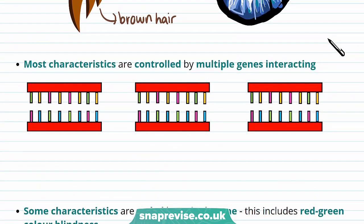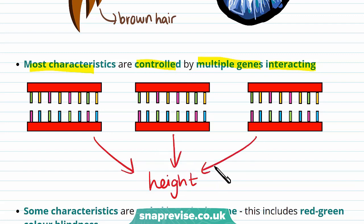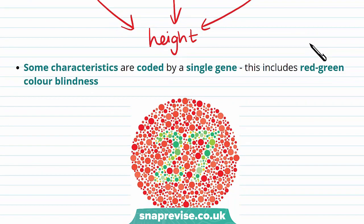However, normally it's not so simple. Most characteristics are controlled by multiple genes interacting. A characteristic like height involves many genes interacting together. However, some characteristics are coded by a single gene, and this includes red-green colour blindness. In people with red-green colour blindness, they have a single gene that makes them unable to tell the difference between the colours red and green.